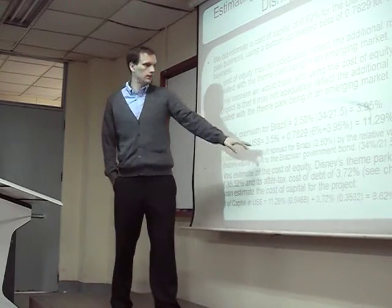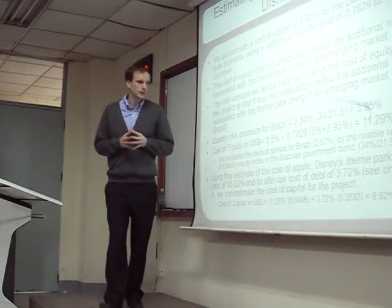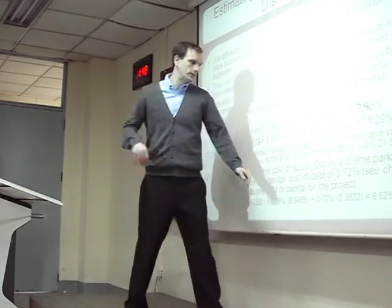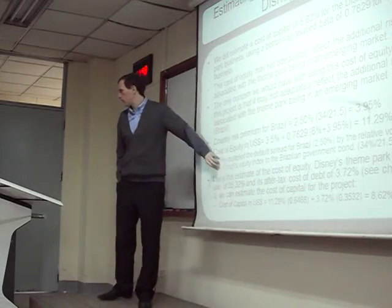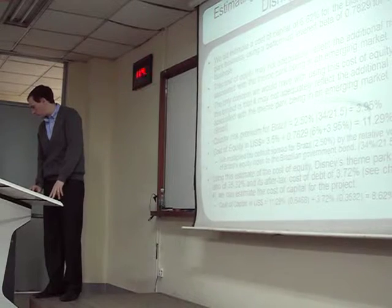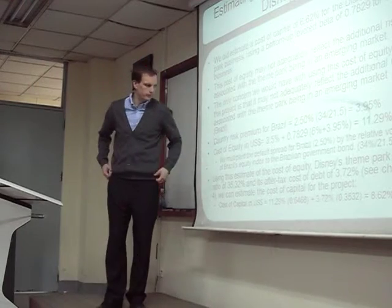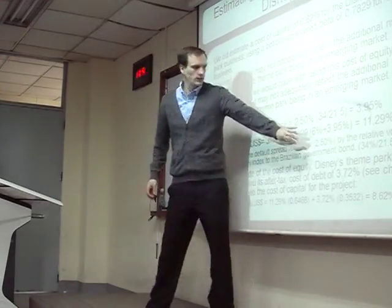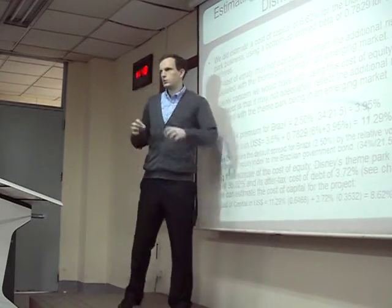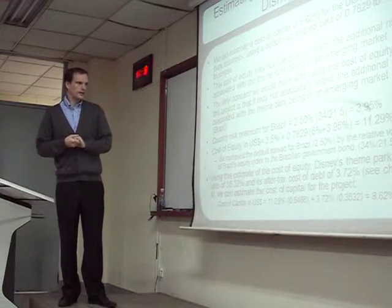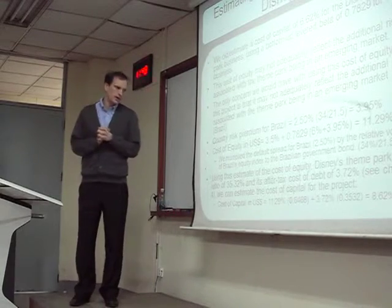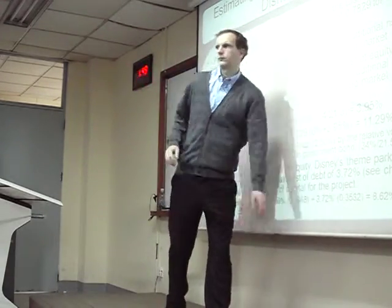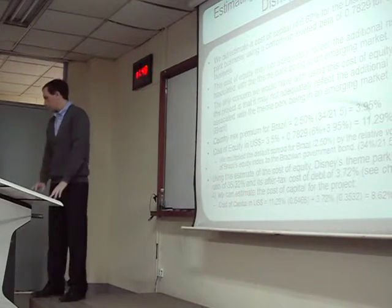Then we find the cost of equity: risk-free rate plus beta times the risk premium. We updated our risk premium because it's in Brazil. This is a reminder of how we find the country risk premium for Brazil: multiply the default spread for Brazil by the volatility of their equity index over government bonds. Using this estimate of the cost of equity, we can update our cost of capital. It's going to be 8.62%, not 6.62%. So we added in additional risk for Brazil.